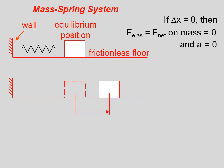Now, if we pull the mass to the right, a distance delta x, let's call it positive, the spring is going to stretch. And the spring is going to pull back to the left. And the further we pull the mass to the right, the harder the spring wants to pull back to the left.